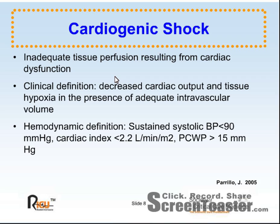Cardiogenic shock is defined as persistent hypotension and tissue hyperperfusion due to cardiac dysfunction in the presence of adequate intravascular volume. Clinical signs include sustained systolic blood pressure less than 90 millimeters of mercury, tachycardia, oliguria, cool extremities, and altered mental status. Hemodynamic findings include cardiac index less than 2.2 liters per minute and pulmonary artery occlusion pressure over 15 millimeters of mercury.